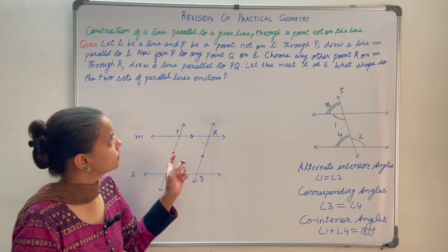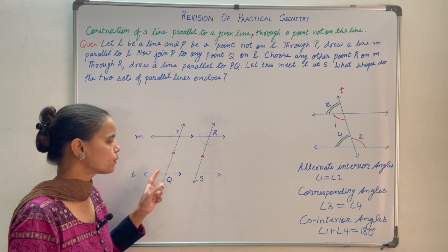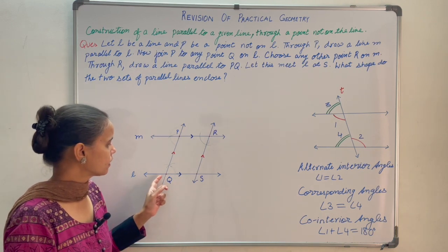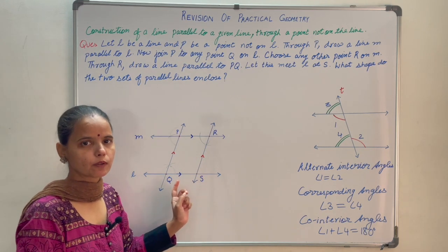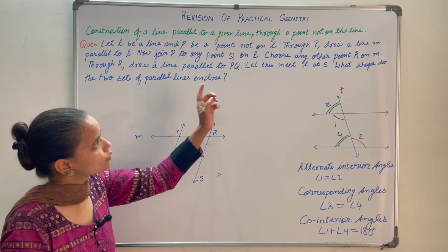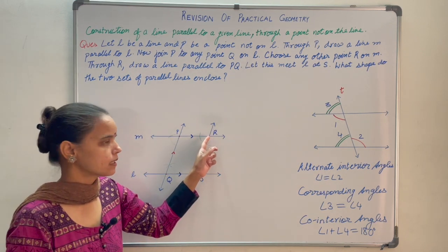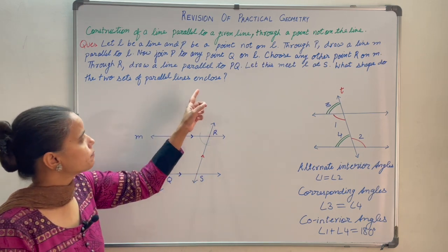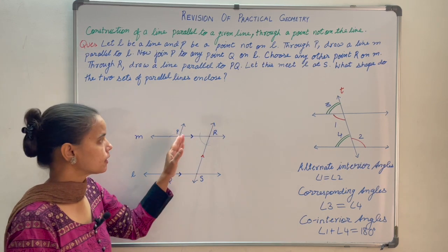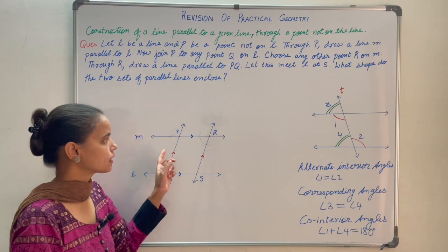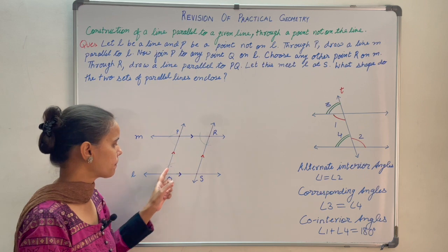Now join P to any point Q on L. The transversal already drawn intersects L at a point, which we name Q. Now choose any other point R on M — mark it anywhere on line M. Through R, draw a line parallel to PQ. R is not lying on PQ, so the same steps must be repeated to draw a line through R parallel to PQ.